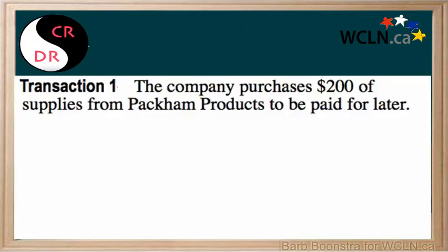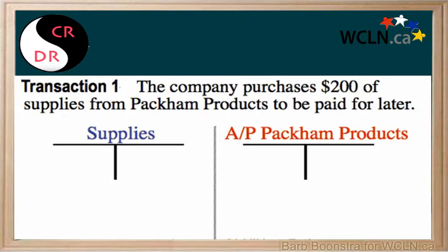In this first transaction, the company purchases $200 of supplies from Pack and Products, to be paid for later. The first task is to decide which accounts will be affected. We have purchased supplies, so it will be the supplies account. We are paying for this product later — as soon as you see 'paid for later,' you know that this is an accounts payable.